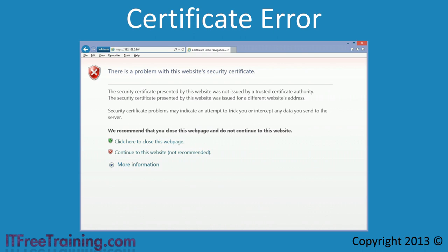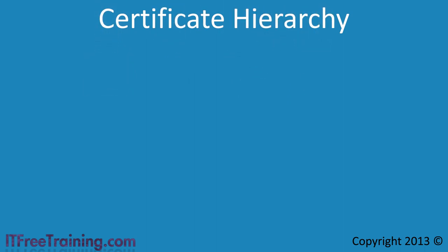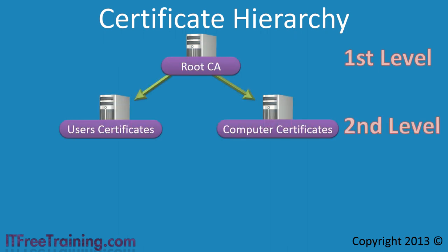Although certificate authorities like VeriSign are trusted by Windows by default, you may want to use your own certificate authority. Besides having complete control over the certificate authority, certificates from companies like VeriSign do cost money. If you have your own certificate authority, you can issue as many certificates as you wish at no cost besides the cost for the operating system and hardware to run it on. When deploying a certificate infrastructure, this will often be done at a number of different levels. At the top you have the root CA. The root CA will issue certificates to the subordinate or second-level certificate authorities. Often, after the root CA has issued certificates to the second-level authorities, the root CA will be taken offline.